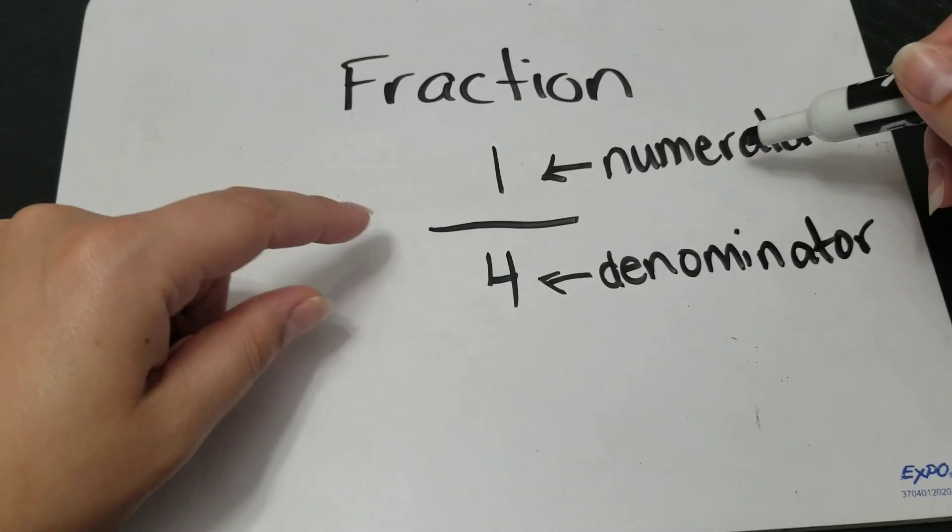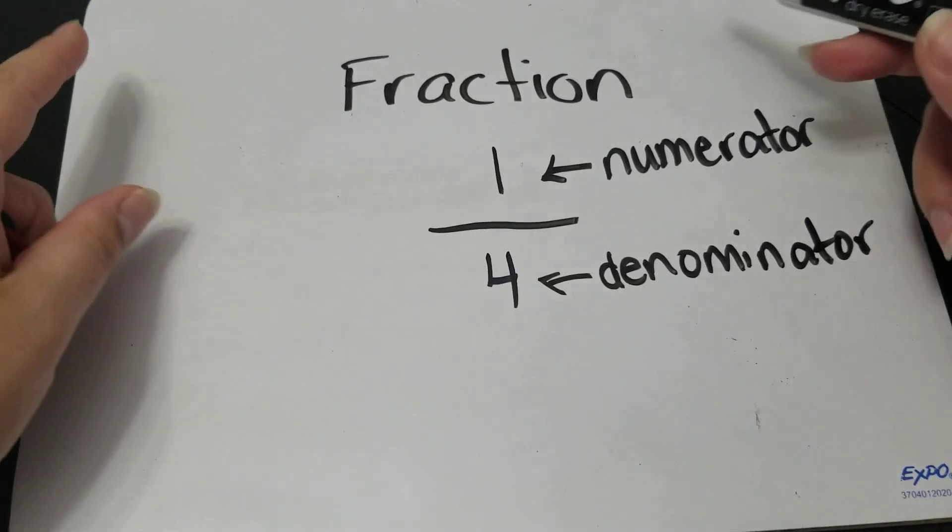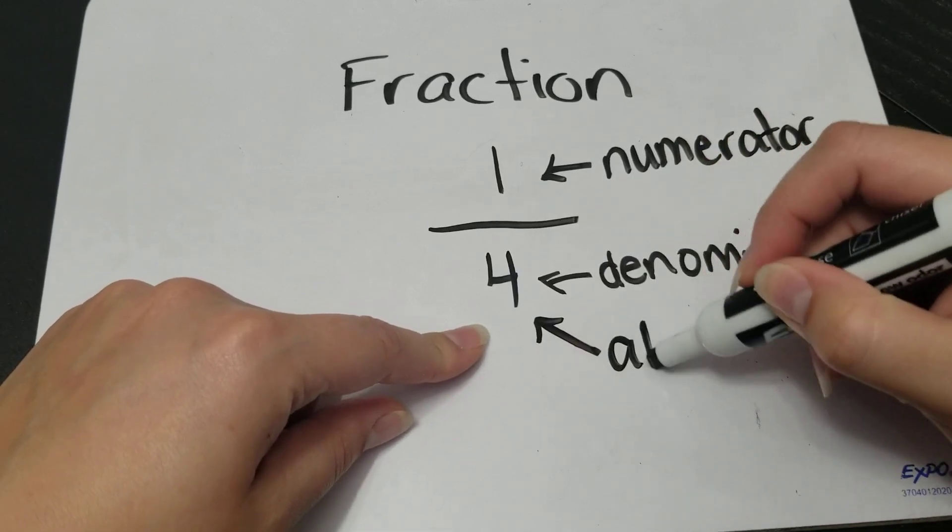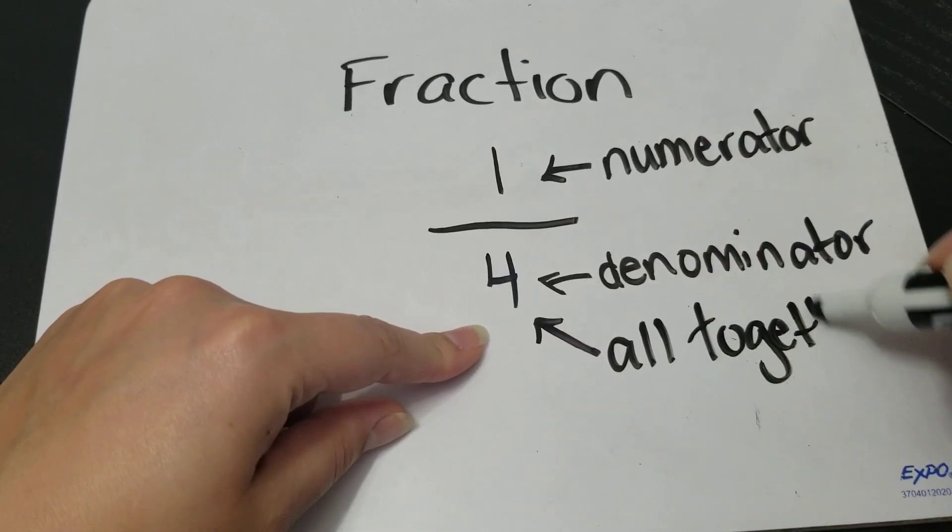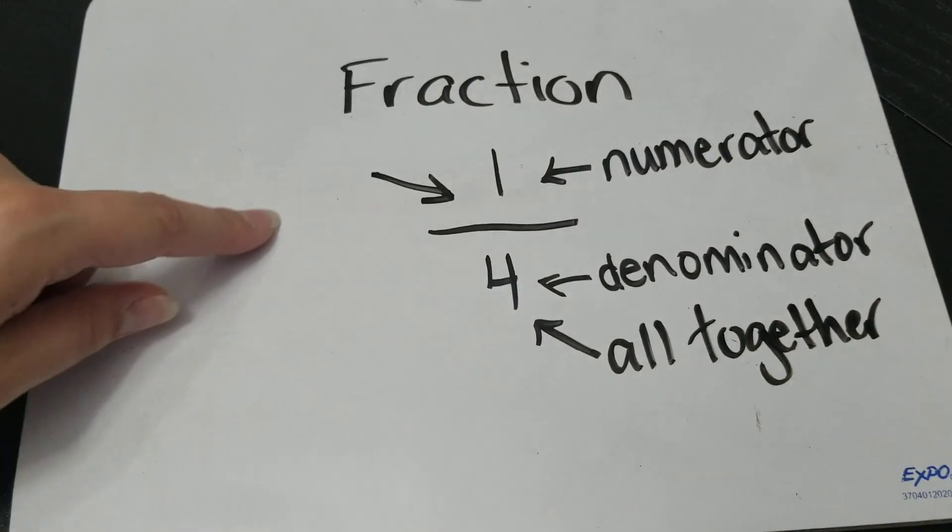The numerator tells me how many I have out of how many I have all together. So this number is the all together number. And this number is the what I'm looking for number.